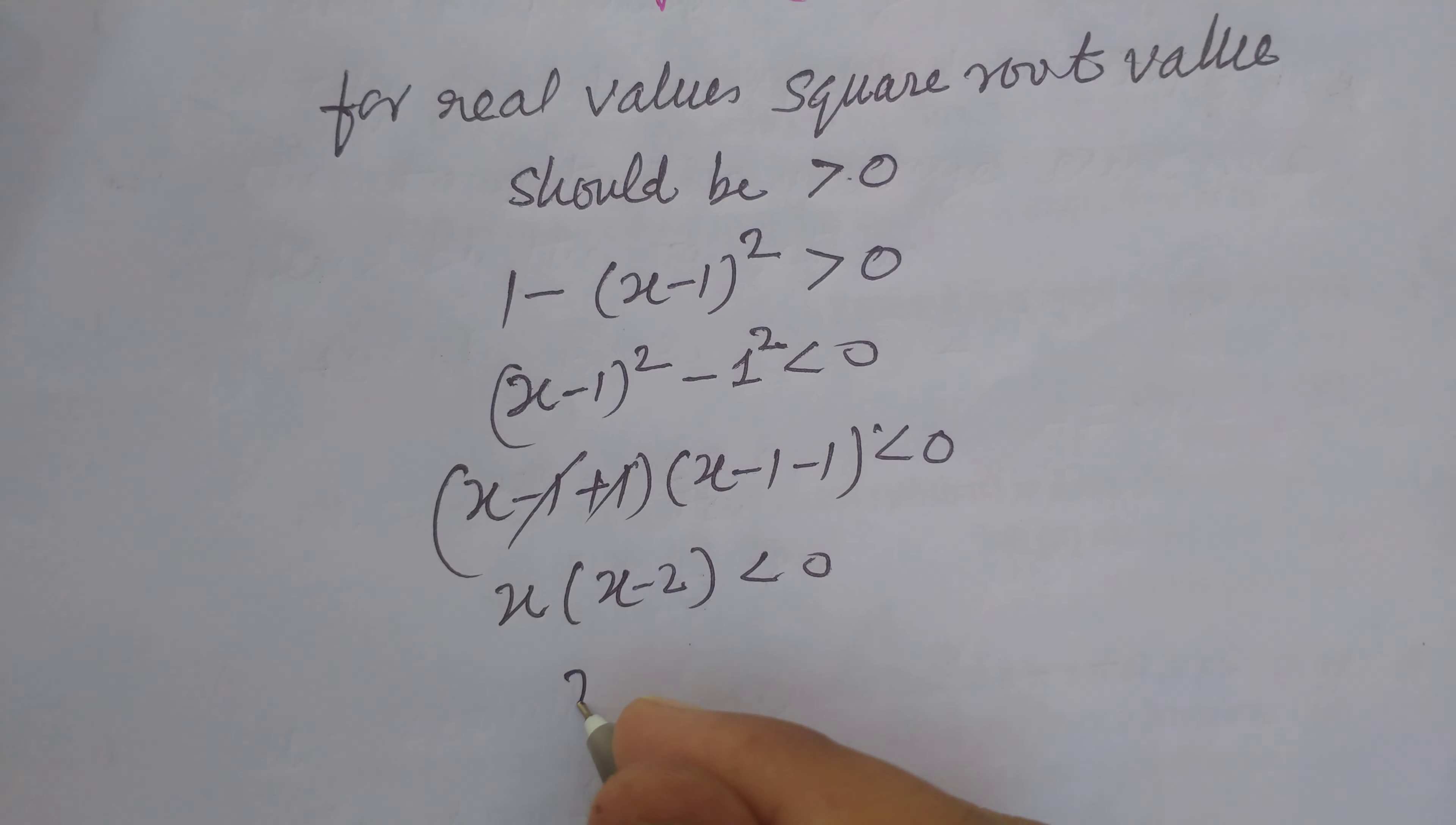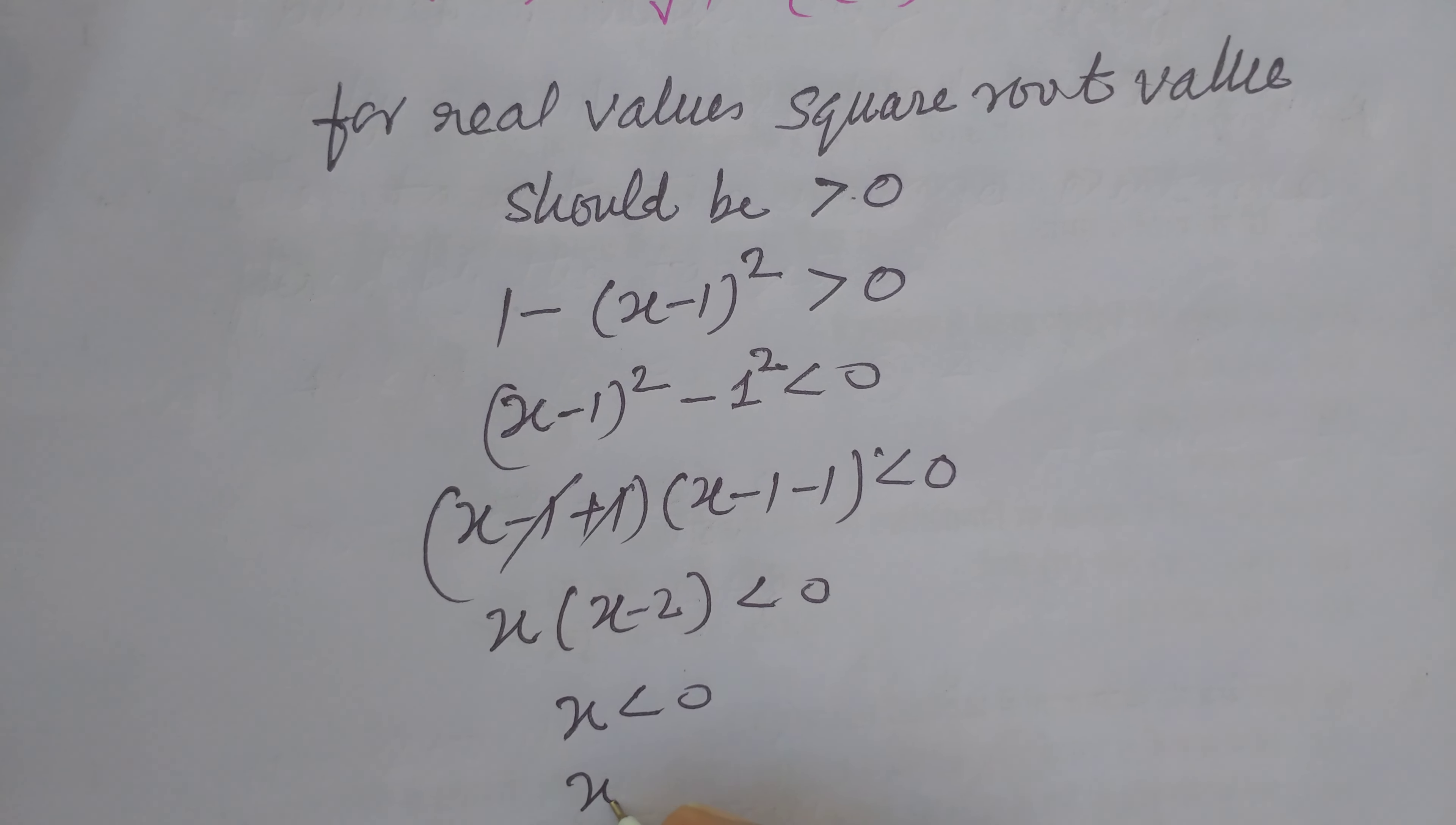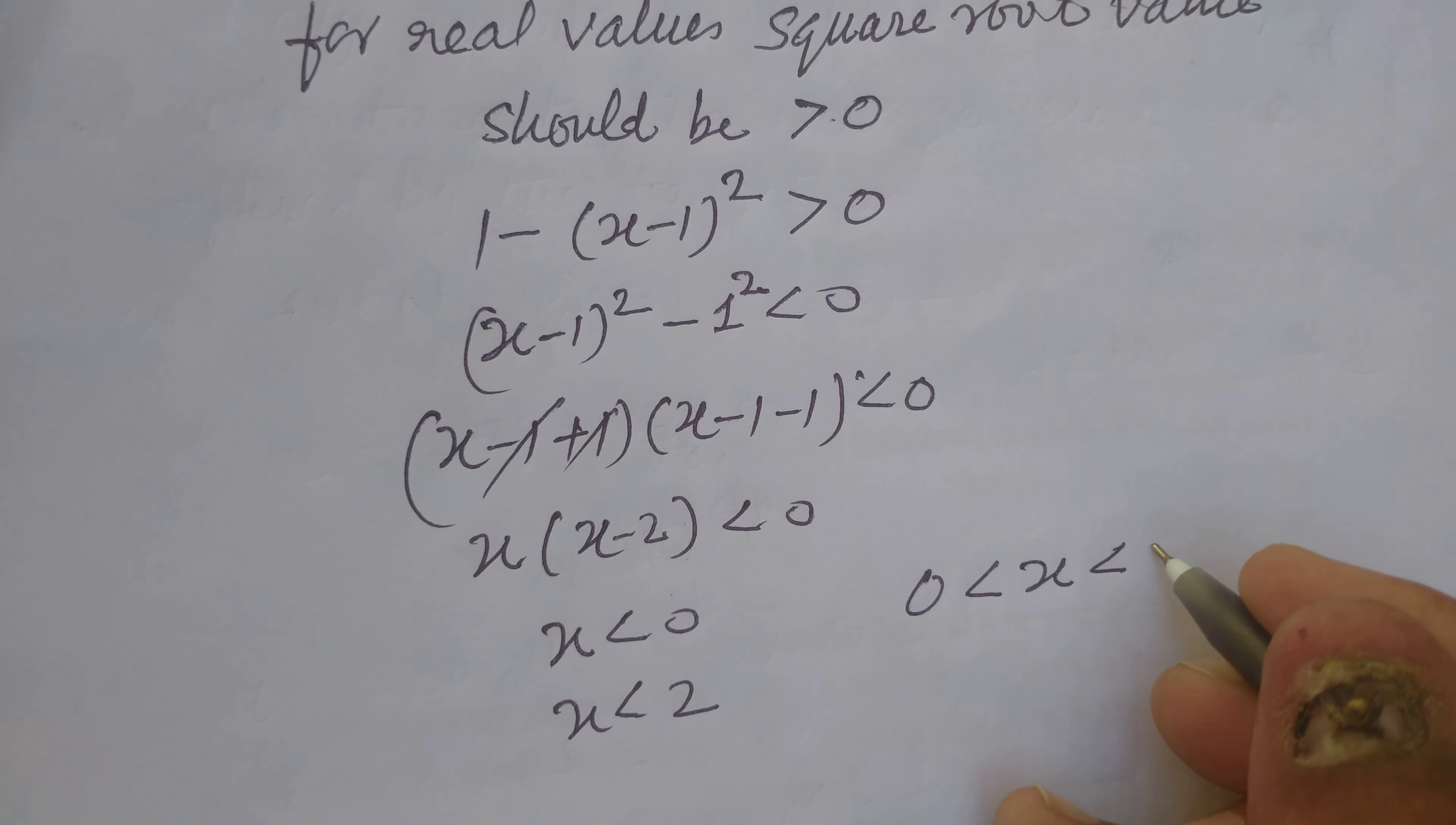It means x is greater than zero and x is less than two, so zero is less than x, which is less than two.